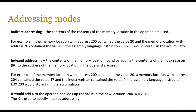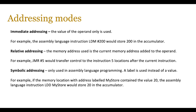The X part is used to specify index addressing and it uses the index register. Next is immediate addressing — here the value of the operand itself is used. For example, LDM hash 200 would store 200 directly in the accumulator; the hash indicates this is the actual data and you don't need to go to any address to fetch it. Then there's relative addressing, where the memory address used is the current memory address added to the operand. For example, JMR hash 5 would transfer control to the instruction five locations after the current instruction, so if the current instruction is at address 200, JMR hash 5 would go to address 205.